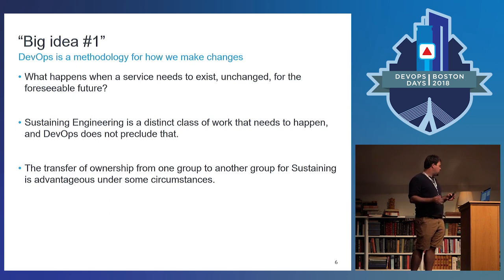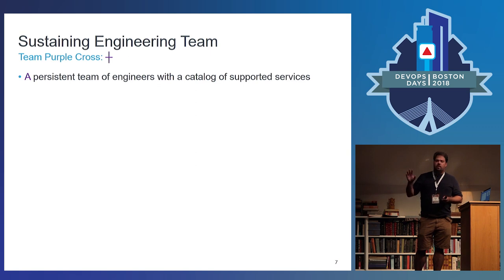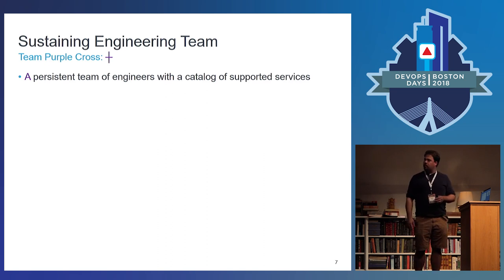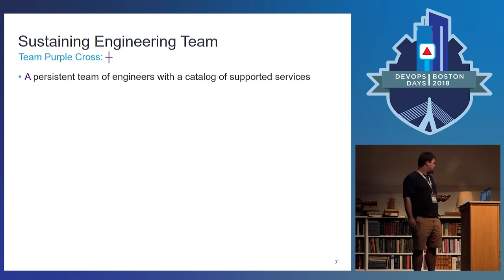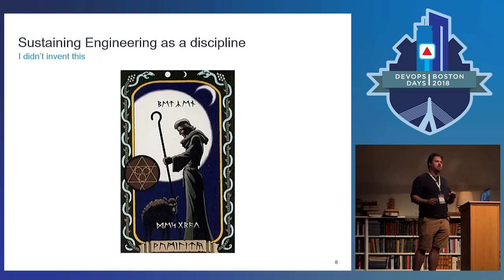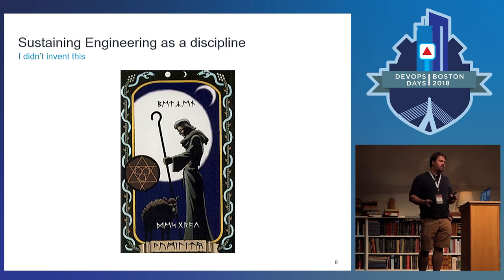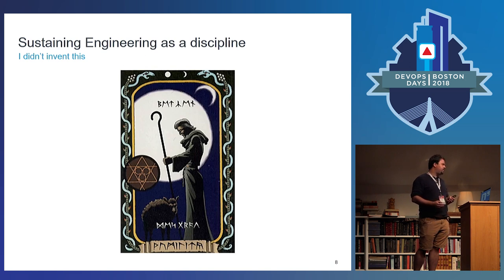The transfer of ownership from one group to another is certainly advantageous under certain circumstances, such as the ones I laid out. To keep things separate, I'll refer to the sustaining engineering team — the group of people — as the Purple Cross. When you see that on a slide or hear me say it, Purple Cross refers to the group of people, not the discipline as a whole. The Purple Cross team is a persistent group of engineers with a catalog of supported services. These aren't entirely my ideas — I'm actively trying to make my team better and draw out thoughts from you folks.